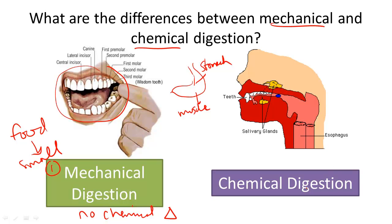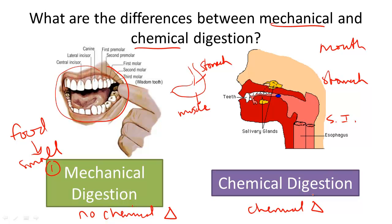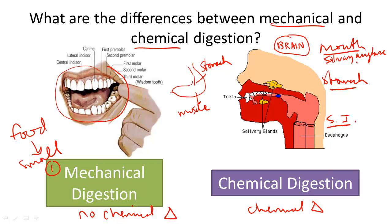The next type of digestion takes place in the mouth, stomach, and small intestines — and this is chemical digestion. Chemical digestion involves chemical changes of food. Even before you start eating, your brain signals for the release of certain enzymes in the mouth. This starts the process of chemical digestion. An enzyme known as salivary amylase will break down carbohydrates into simple sugars called monosaccharides — that's the first step of chemical digestion in the mouth.